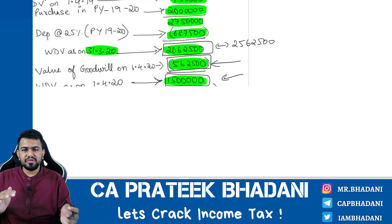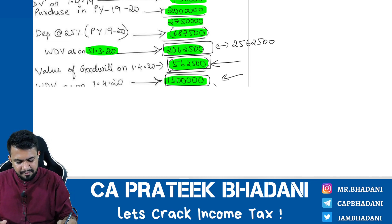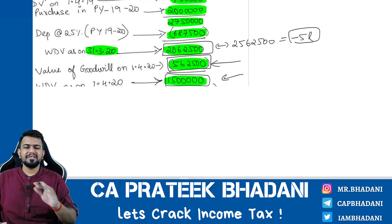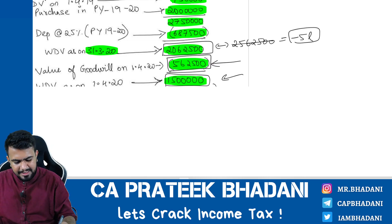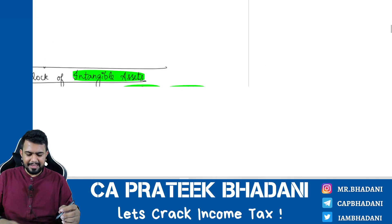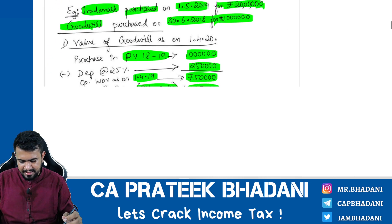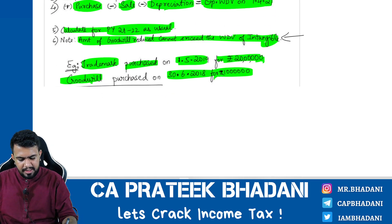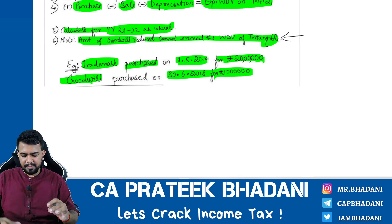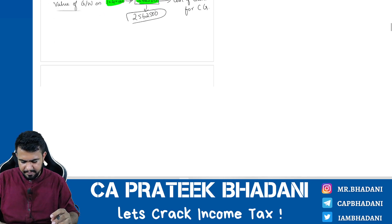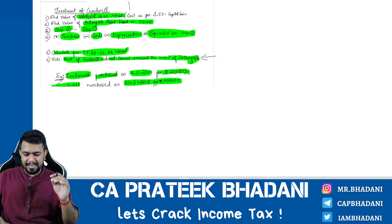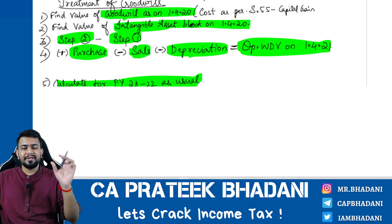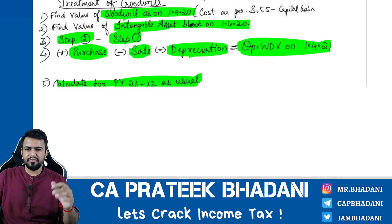In such a case, you cannot reduce ₹25 lakh from ₹20 lakh because the value would become minus ₹5 lakh, which cannot be the value of an asset. Therefore, you can reduce a maximum of only ₹20,62,500 — that is, the amount of goodwill reduced cannot exceed the value of the intangible asset block. The value you exclude from the intangible asset block then becomes the cost of the goodwill in the capital gains chapter.